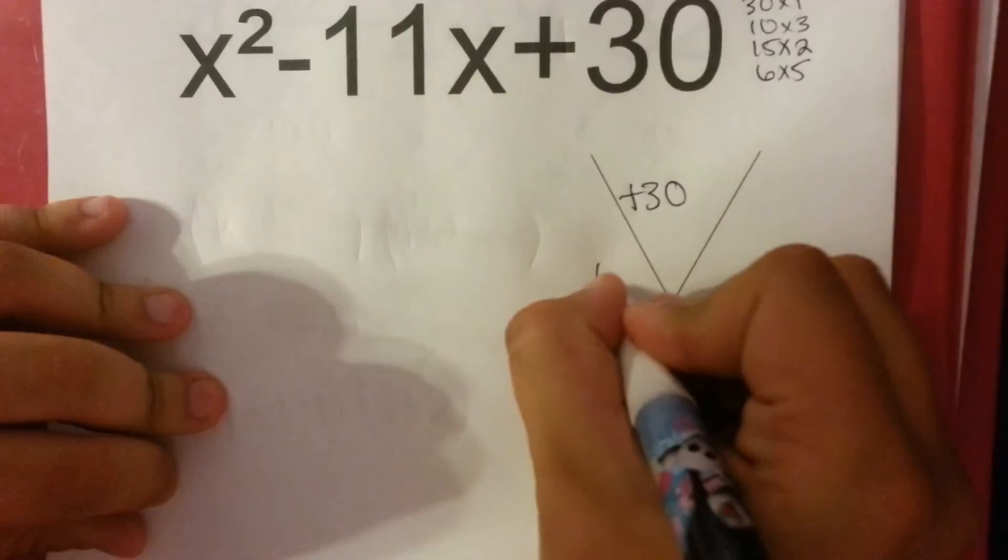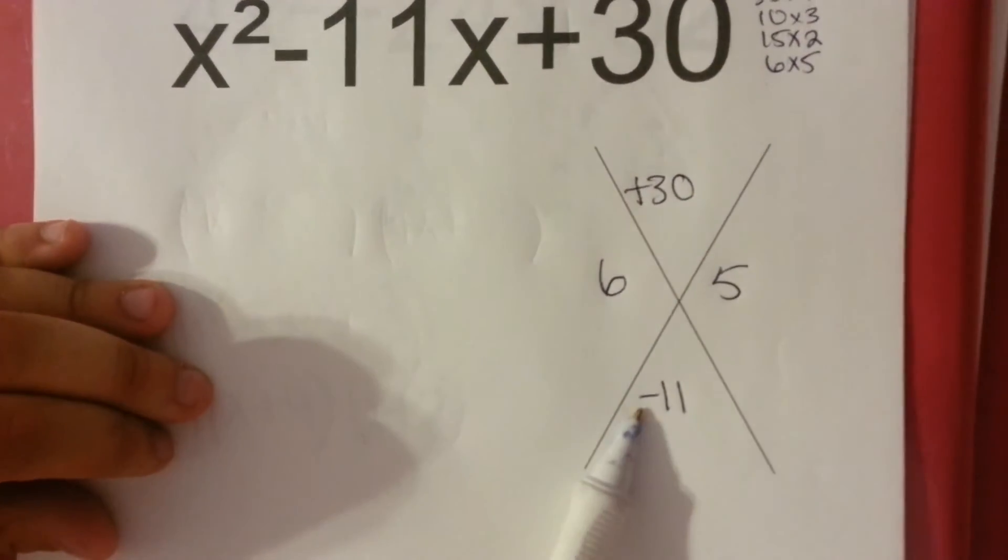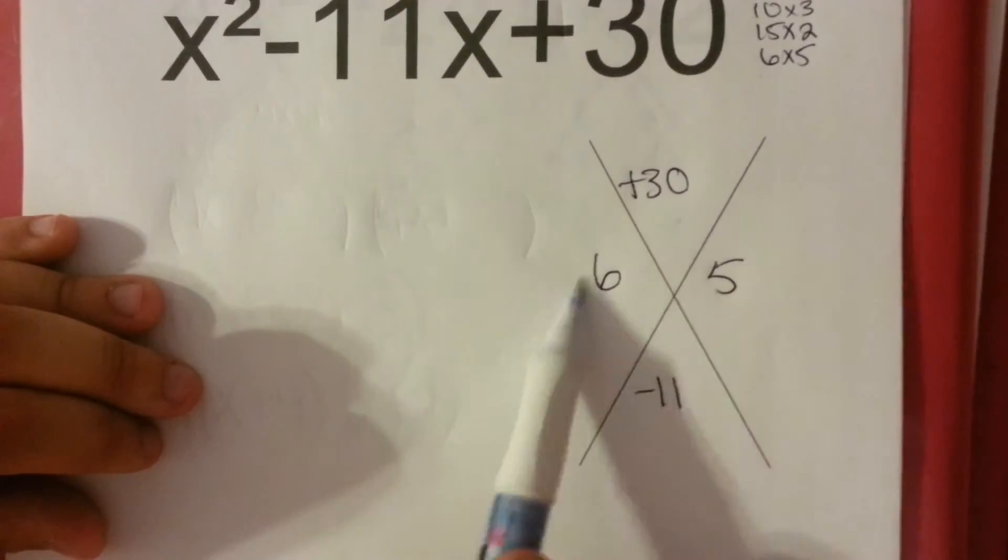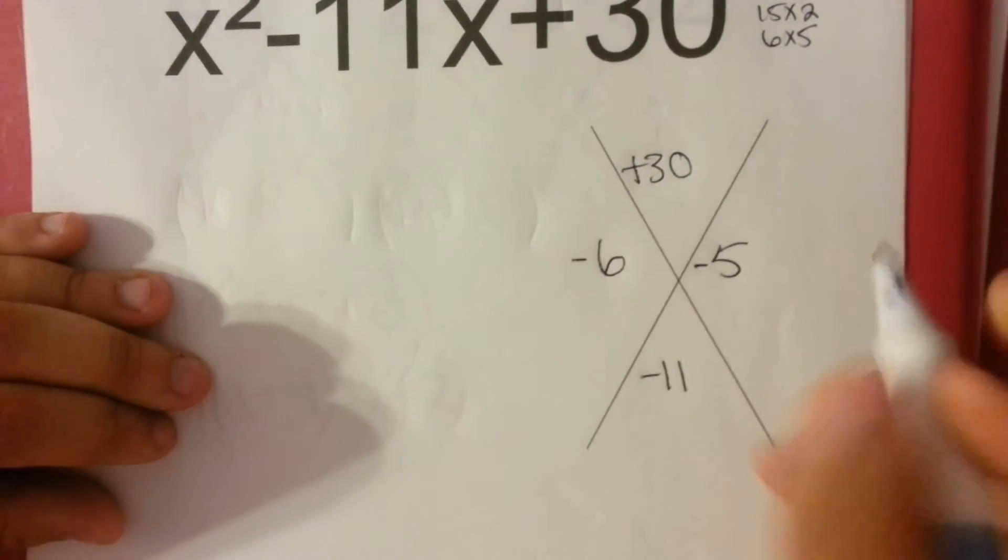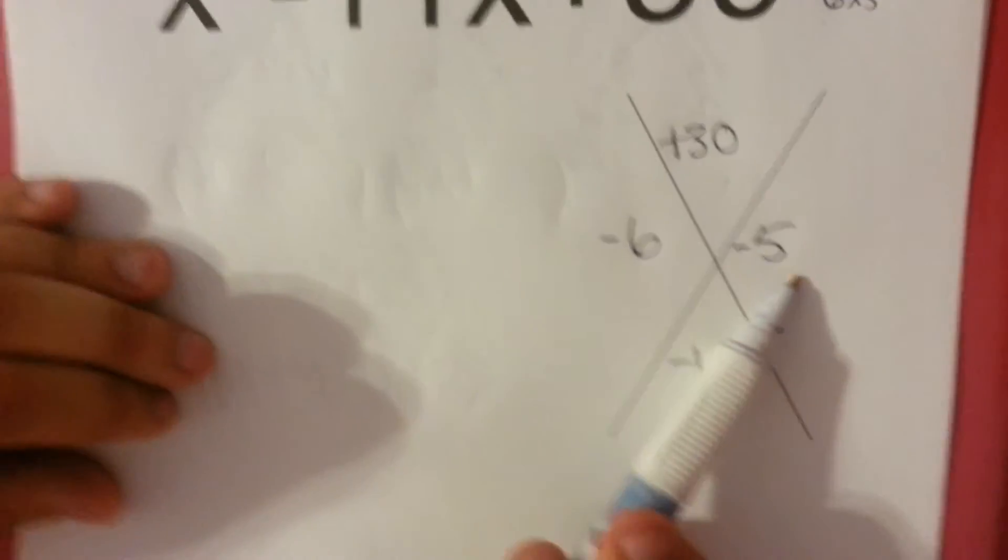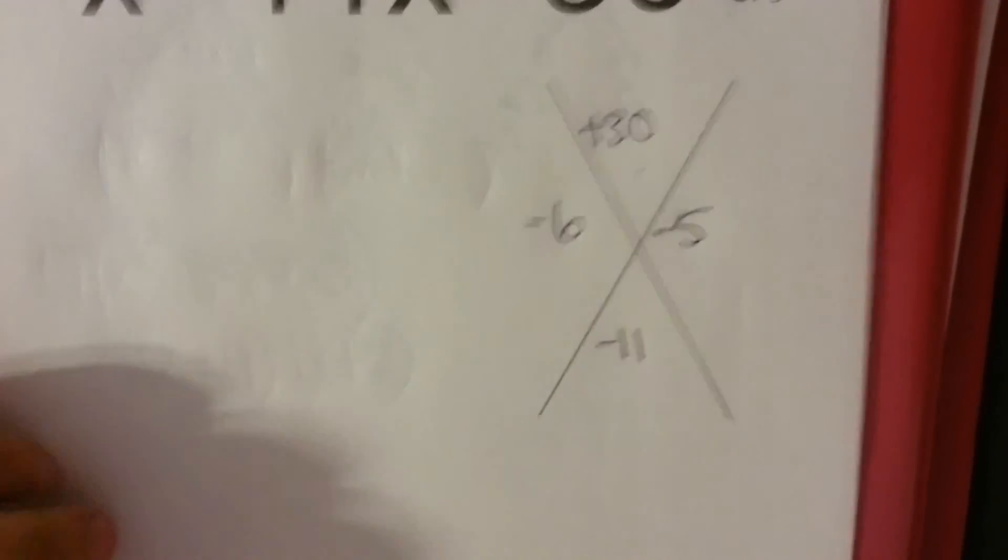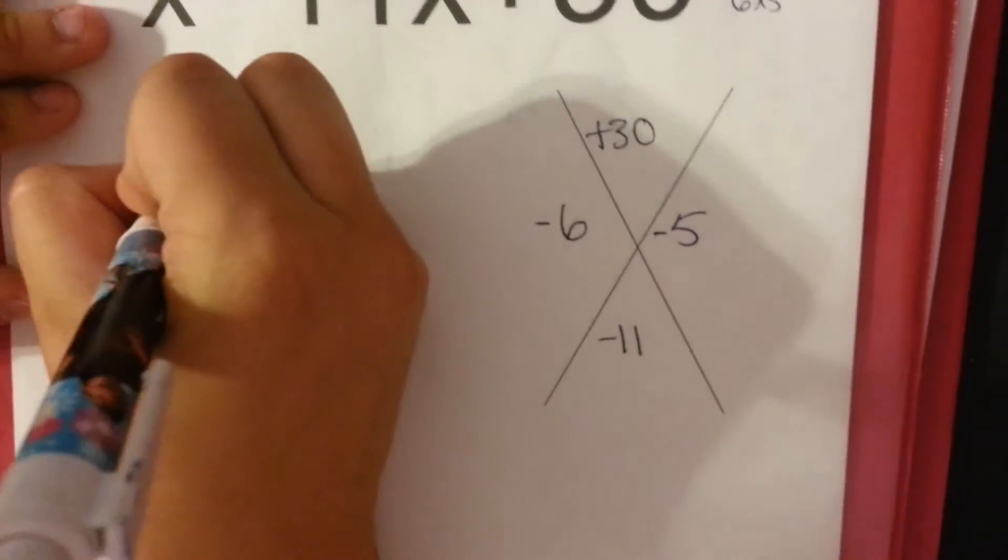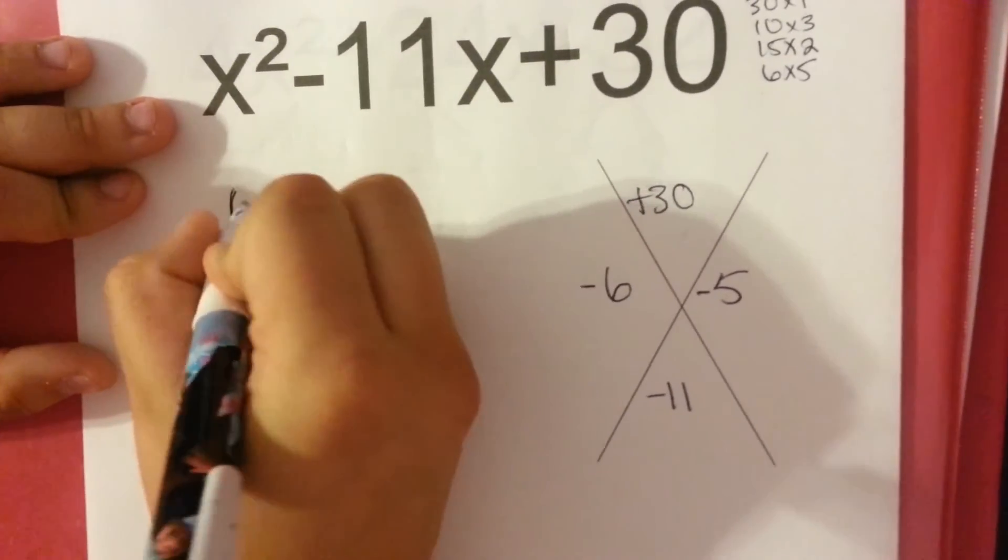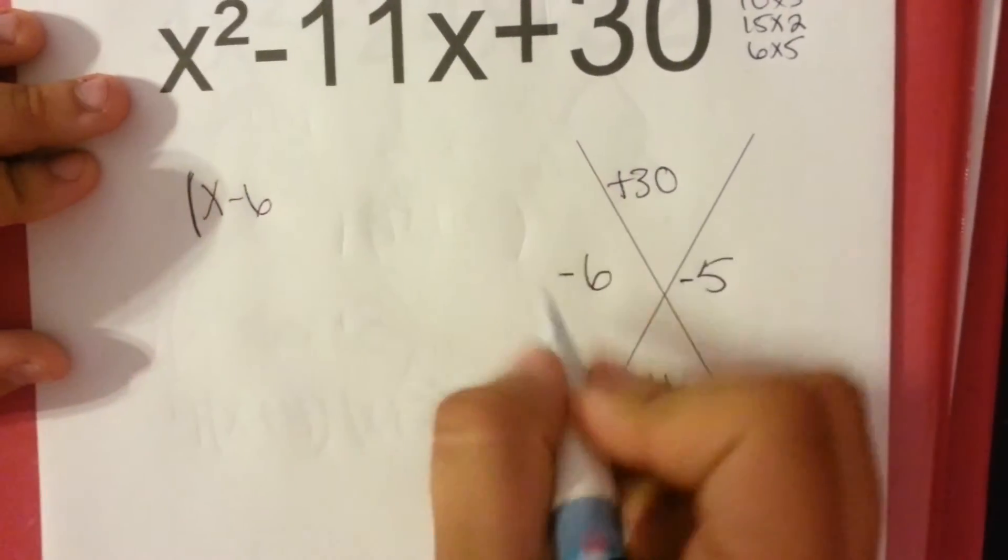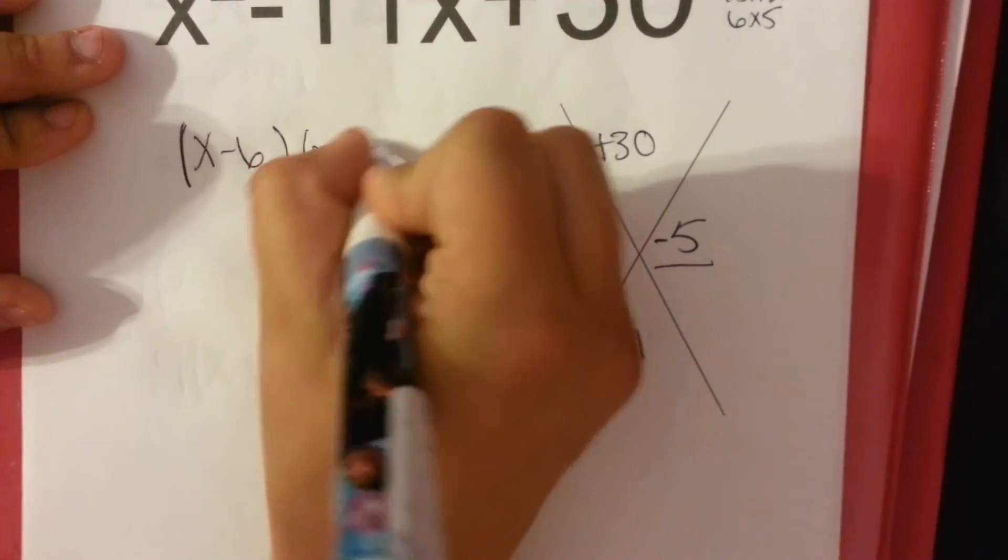So I can put 6 and 5, but it doesn't get me negative 11. 6 times 5 equals 30, but 6 plus 5 doesn't get me negative 11. So I need to change my signs. And if I do that, negative 6 times negative 5 gets you 30. And negative 6 plus negative 5 gets you negative 11. So when I set up my binomials, it'll be x minus 6 and x minus 5.